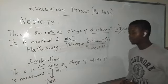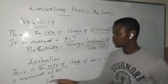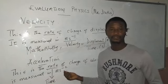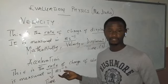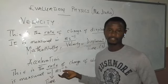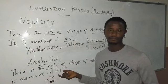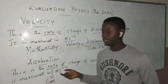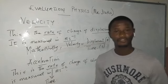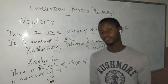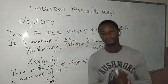The unit of acceleration is meters per second squared — this is the standard unit of measurement for acceleration, and it is completely different from that of velocity, which is measured in meters per second.